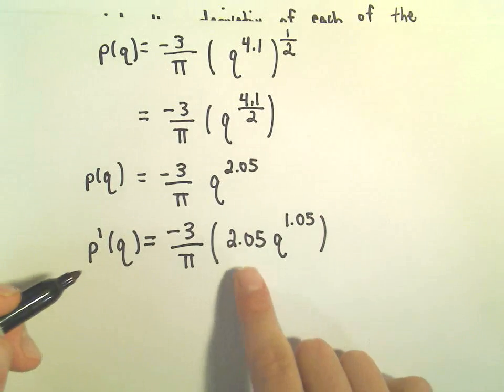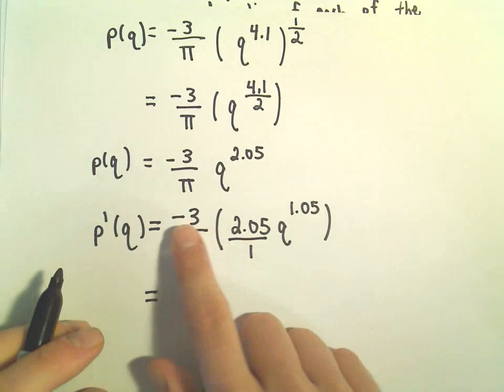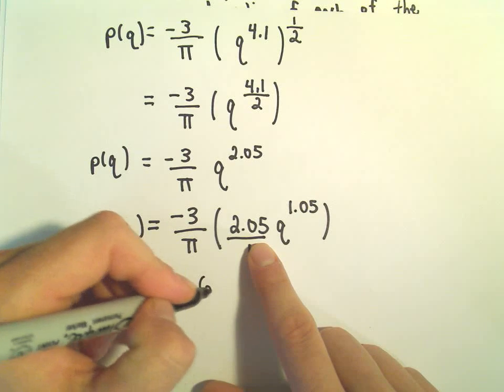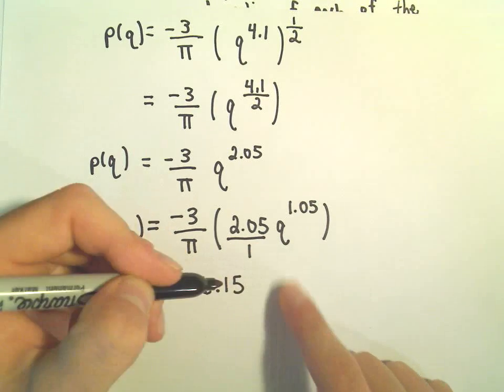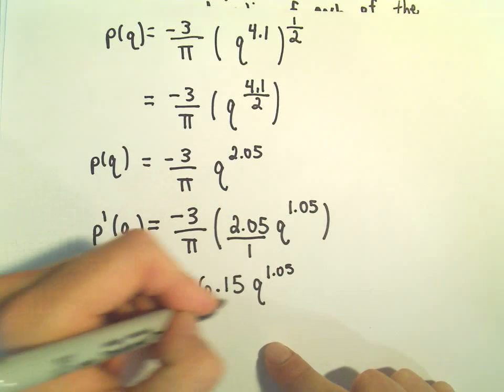And if you wanted to, you could always multiply. You could think about this as being over 1. We could take negative 3 times 2.05. We could make that negative 6.15. The Q raised to the 1.05 would also go in the numerator.